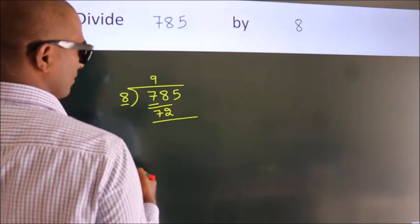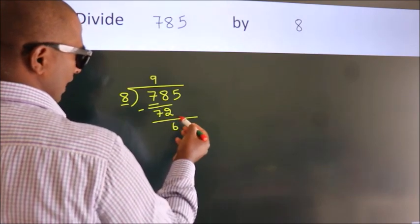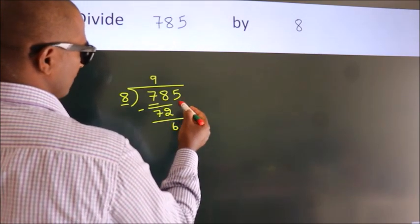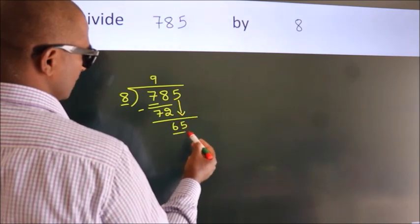Now, we should subtract. We get 6. After this, bring down the beside number. So 5 down. So 65.